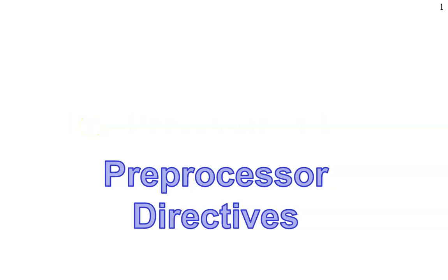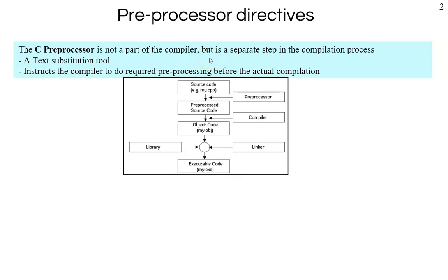Welcome back. In this chapter we will look at preprocessor directives. First, understand what a preprocessor is. The preprocessor is the first step during the compilation process. The source file my.c or my.cpp gets opened and processed by the preprocessor, which does a text substitution — it scans the entire source file and substitutes certain words with other words. After that, the actual compilation happens, then linking and library files get included, and finally you get the executable file.